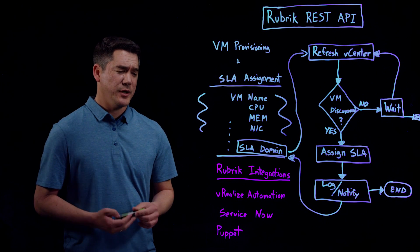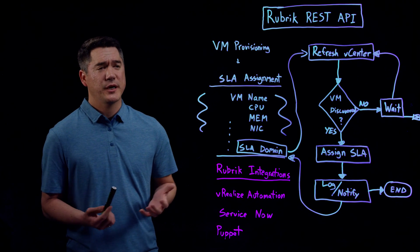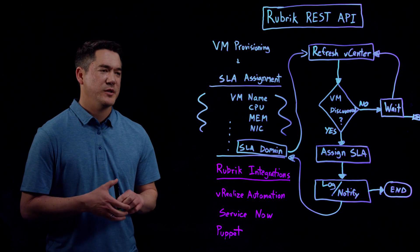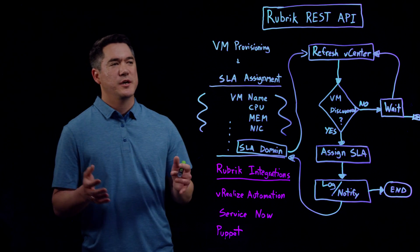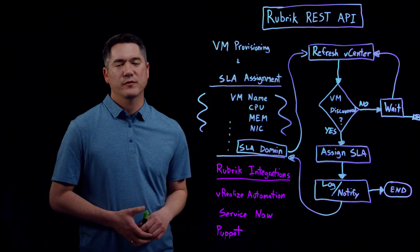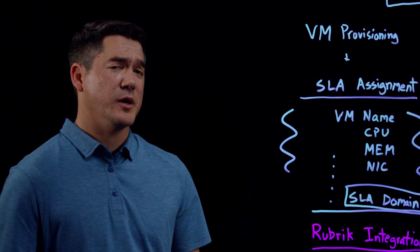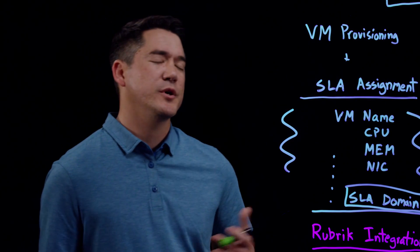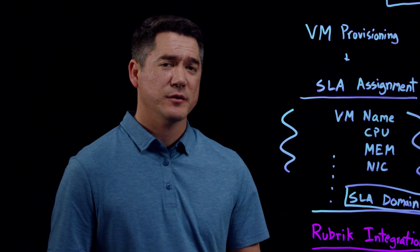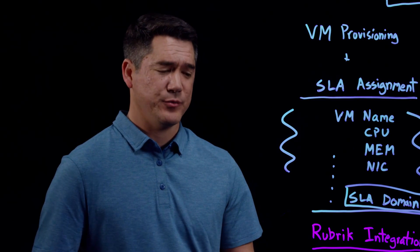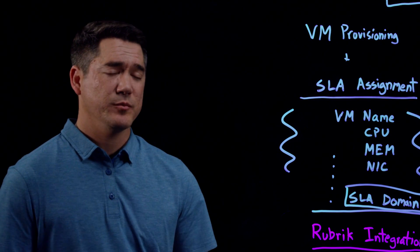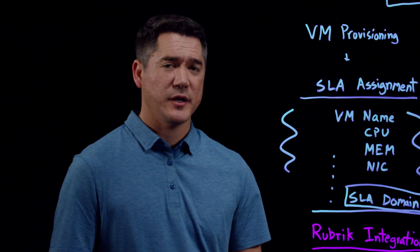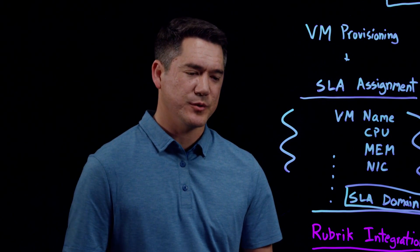With our ServiceNow integration, you will also get comprehensive dashboards and reporting for executive management visibility. And through the Service Catalog, we're going to have this workflow and many others around recovery. With the Puppet module, we actually have a DR workflow that can bring up your DR VMs automatically through instant recovery as well. We also have an item around SLA domain enforcement — if the SLA domain gets modified or changed in any way, we can modify it back to what it should be.